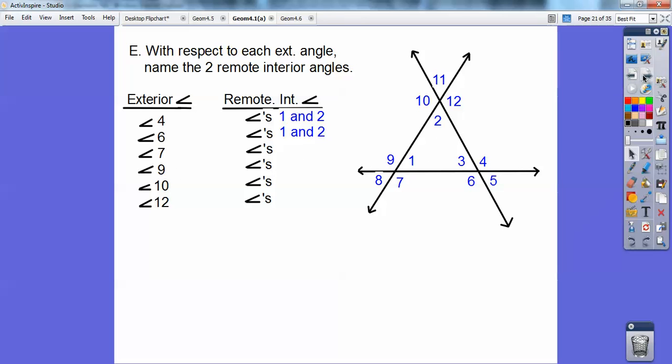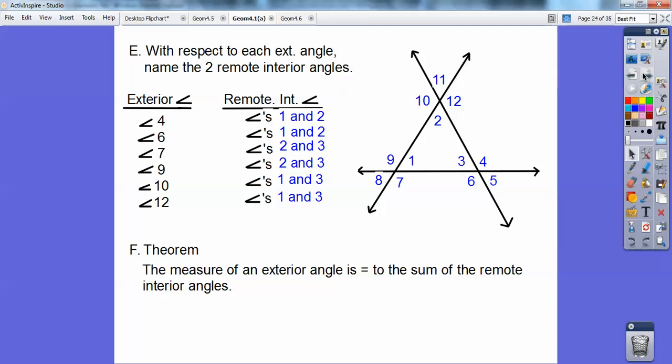And then 10 and 12. 10 forms a linear pair with 2, so 1 and 3 would be the remote interior angles. And the same with 12. 12 is a linear pair with 2, so 1 and 3 would also be the remote interior angles. So theorem - the measure of the exterior angle is equal to the sum of the remote interior angles. This next example explains that theorem.